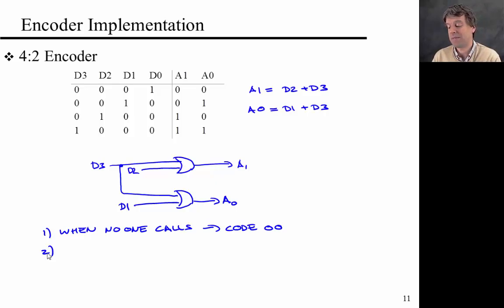The second thing that happens is that when D2 and D1 call, so I think that was the mailroom and the vice president, the code that gets displayed is 1, 1. So if D2 and D1 are true then the code that gets displayed is 1, 1 which actually looks like the CEO is calling even though she or he isn't.